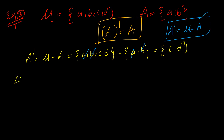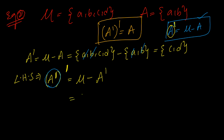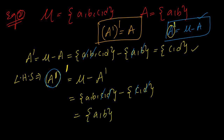Now let us consider the left hand side. LHS is A complement whole complement. Here we have two complements. If we have one complement, we take mu minus that set. With two complements, this will be mu minus A complement. That is {A, B, C, D} minus {C, D}. We remove common terms and take leftover terms in the first set, which is {A, B}. This is simply our A set, which equals RHS. So A complement whole complement is nothing but set A.